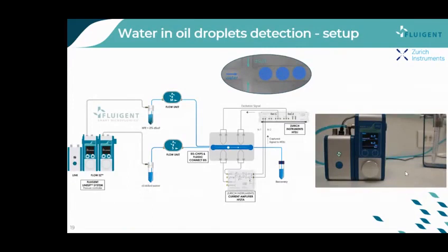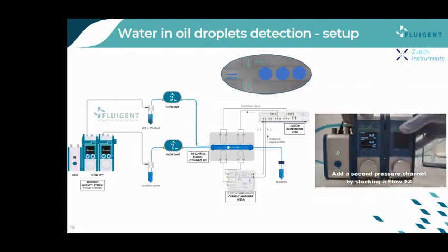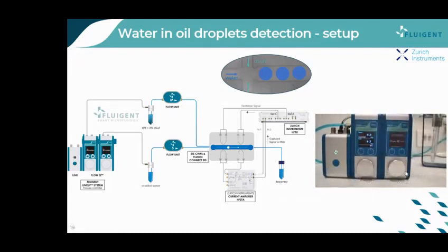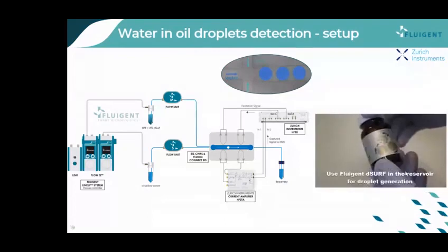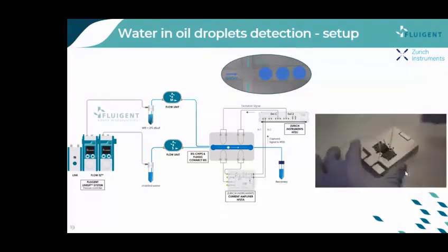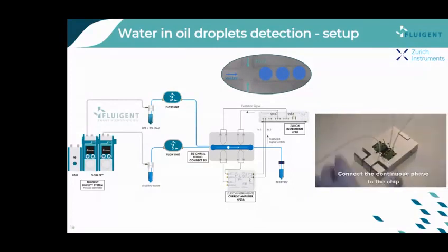Thank you, Meng. Now let's see the second application. In a similar fashion, we can also measure droplets with just a bit of modification. As you can see on the scheme, we need two flow controllers to generate droplets. Two flow controllers are connected to two reservoirs, one containing water and the second one containing oil or surfactant for generating highly stable droplets. The second flow controller is simply stacked to the first one, which is subsequently connected to the second reservoir. Oil is injected in the second inlet of the microfluidic chip that surrounds the main channel, allowing droplet generation within the same chip.